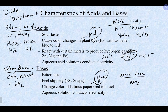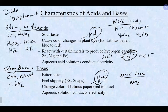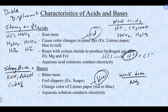If it's a strong acid or strong base, when you write the total ionic equation you completely break it apart. If it's a weak acid or weak base, you keep it together and do not break it apart when writing the total ionic equation.